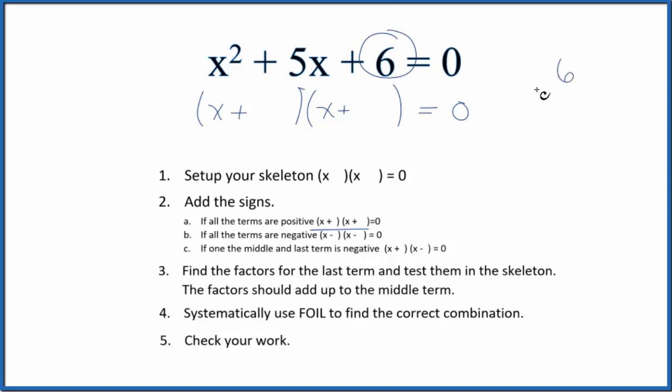So if we look at 6, here's 6. 6 could be 6 times 1. That's a factor of 6, but it doesn't add up to the 5 here that we're looking for. 3 times 2, that equals 6. And 3 plus 2 is 5. So if we put a 3 and a 2, we should have just factored this equation.